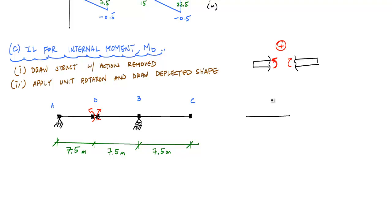if this were segment AD, and I apply this unit rotation going counterclockwise, I'm going to have a deformed shape that looks like this, assuming there are no boundary conditions. But now since I have a boundary condition at A, meaning that point A is pinned and cannot move up and down,